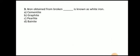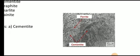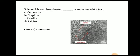Next question: Iron obtained from the broken structure is known as — cementite, graphite, pearlite, or bainite? The answer is cementite. Here you can see the microstructure of cementite. In cementite you will basically find a matrix of cementite and ferrite. Cementite is white in color whereas ferrite is black in color. So iron obtained from the broken cementite is known as white iron.